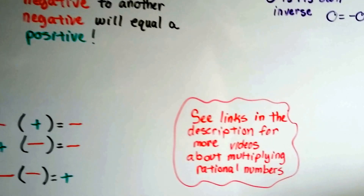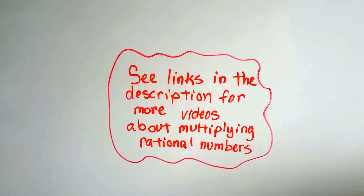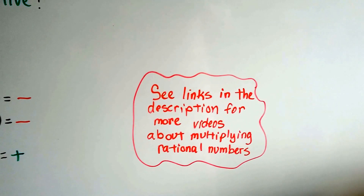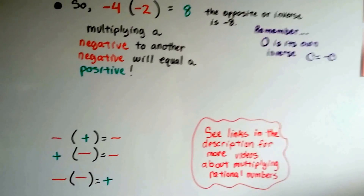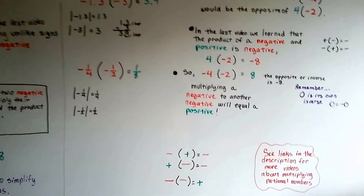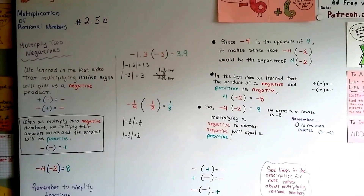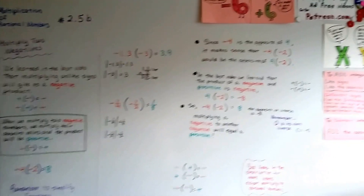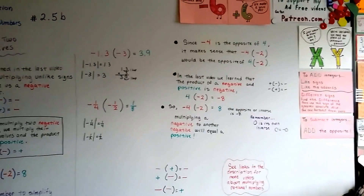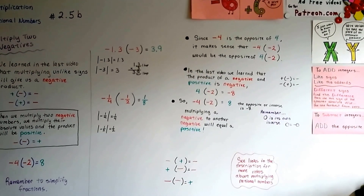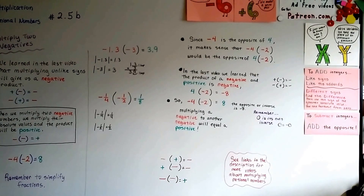There are links in the description for more videos about multiplying rational numbers from seventh grade and earlier that might help you understand what we're doing here. Next, in 2.5c, we're going to talk about the multiplicative property of zero. Keep your chin up, keep trying — I'm going to stick with you and we'll make it through Algebra 1. Bye!